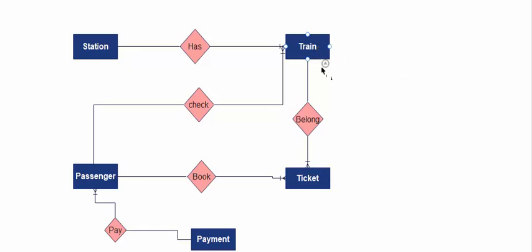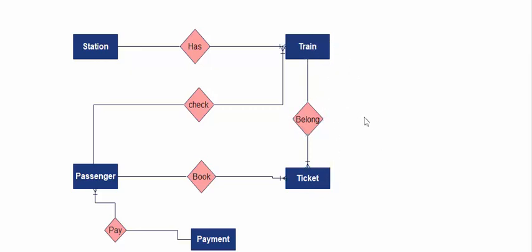The train has tickets, or a ticket belongs to a train. Station and train has one-to-many because in a station there may be multiple trains. Passenger and train has one-to-many because a passenger checks for more than one train. Passenger and ticket is one-to-many because a passenger may book more than one ticket. Train and ticket is one-to-many because a train has more than one ticket. Passenger and payment has many-to-one because payment is done by more than one passenger and a passenger pays once to the system.